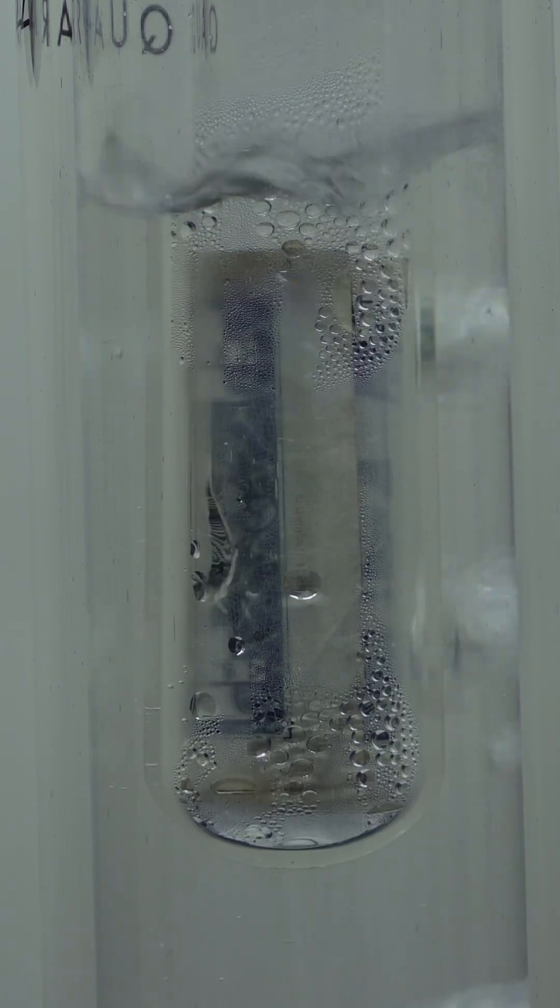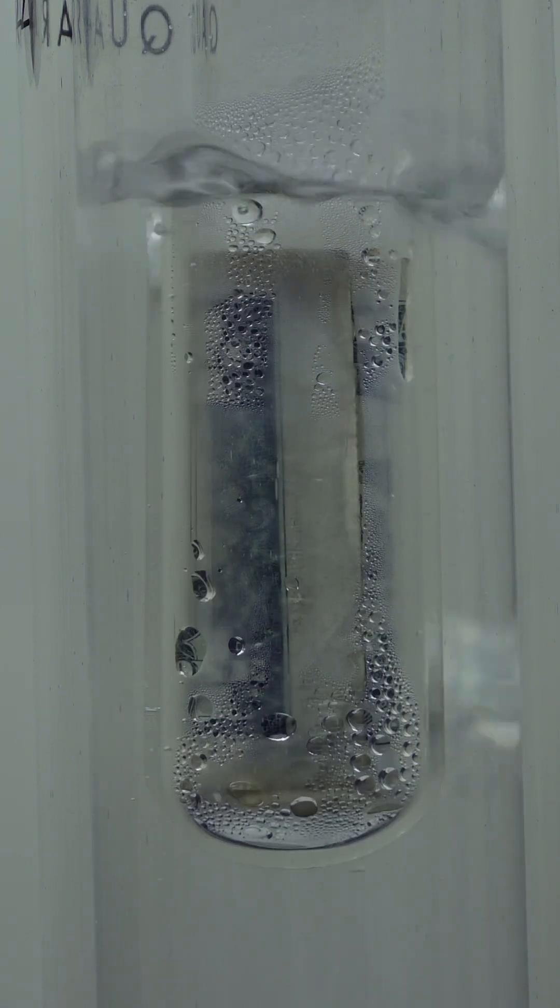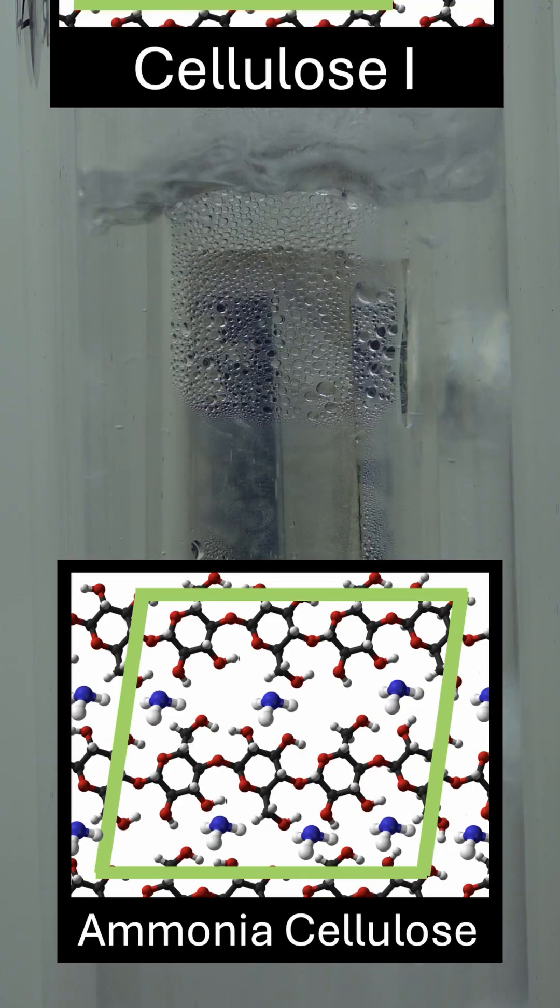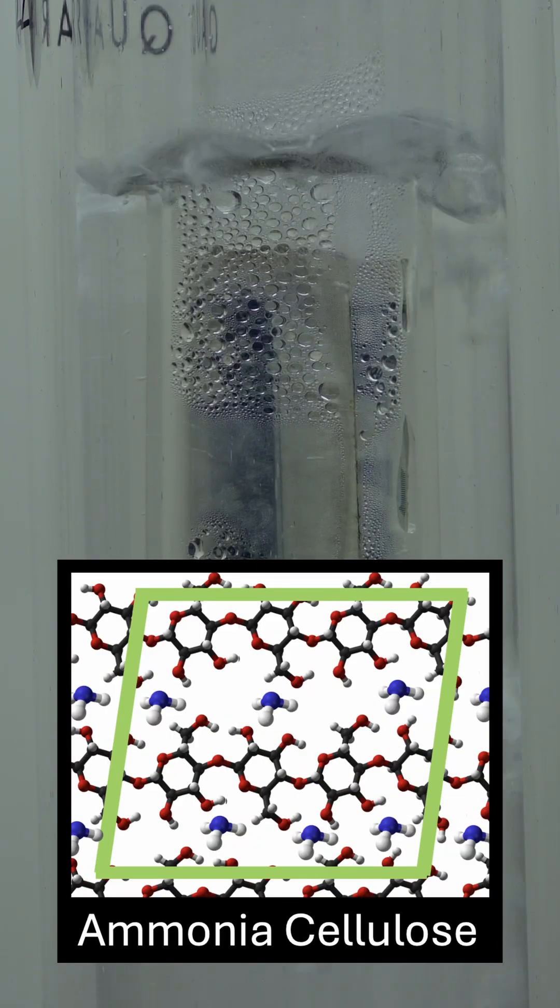As this icy ammonia soaks into the dollar bill, something amazing happens. The cellulose fibers, the stuff that makes up the paper, began to expand into a bizarre crystal structure.